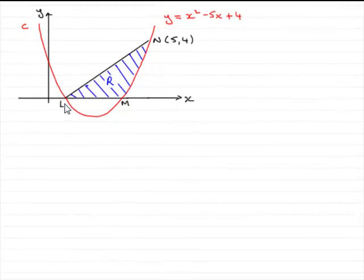Now what I've done in this part of the question is just sketch the diagram that we were given, and we've got to find these points L and M where the curve y equals x squared minus 5x plus 4 crosses the x-axis.